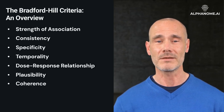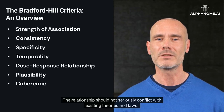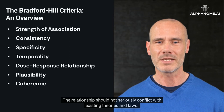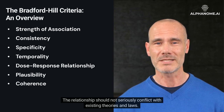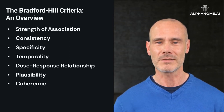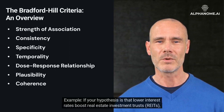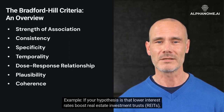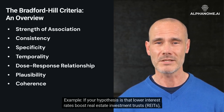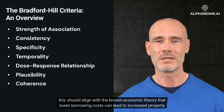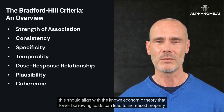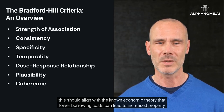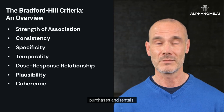Coherence: The relationship should not seriously conflict with existing theories and laws. Example: if your hypothesis is that lower interest rates boost real estate investment trusts (REITs), this should align with the known economic theory that lower borrowing costs can lead to increased property purchases and rentals.